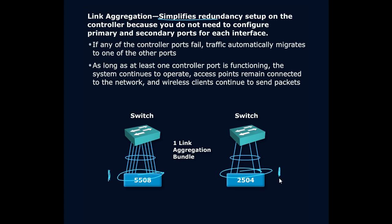Now this actually increases speed. It's load sharing, not load balancing. That allows us theoretically up to 4 times our original speed. So if this is a 1 gigabit connection, I would have around 4 gigabits — actually less, but around a 4 gigabit connection to the switch.